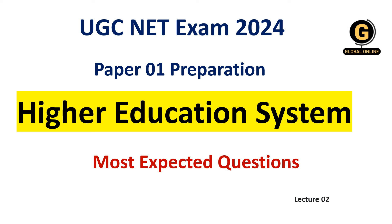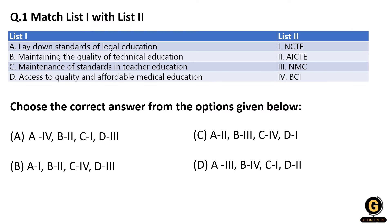Now going to our first question. They have asked us to match List 1 with List 2. List 1 gives the functions of government bodies, and List 2 gives the names or acronyms of those bodies. As I told you earlier, whenever a 'match the following' question comes, if you know one correct pair, your chances of answering correctly increase by 50%, and if you know two correct pairs, you can answer with 95% accuracy.